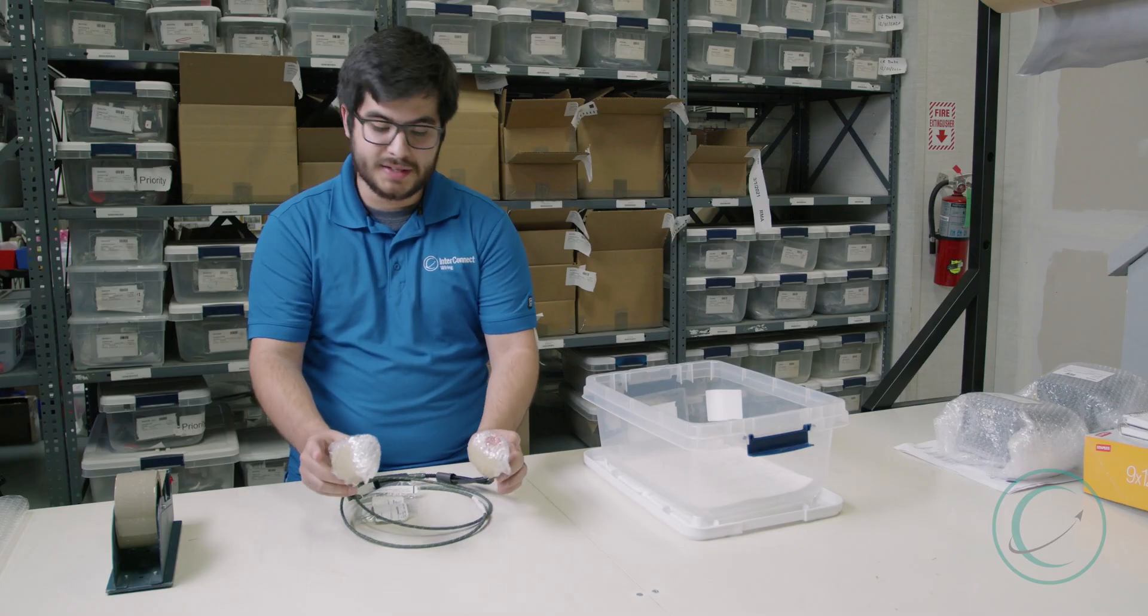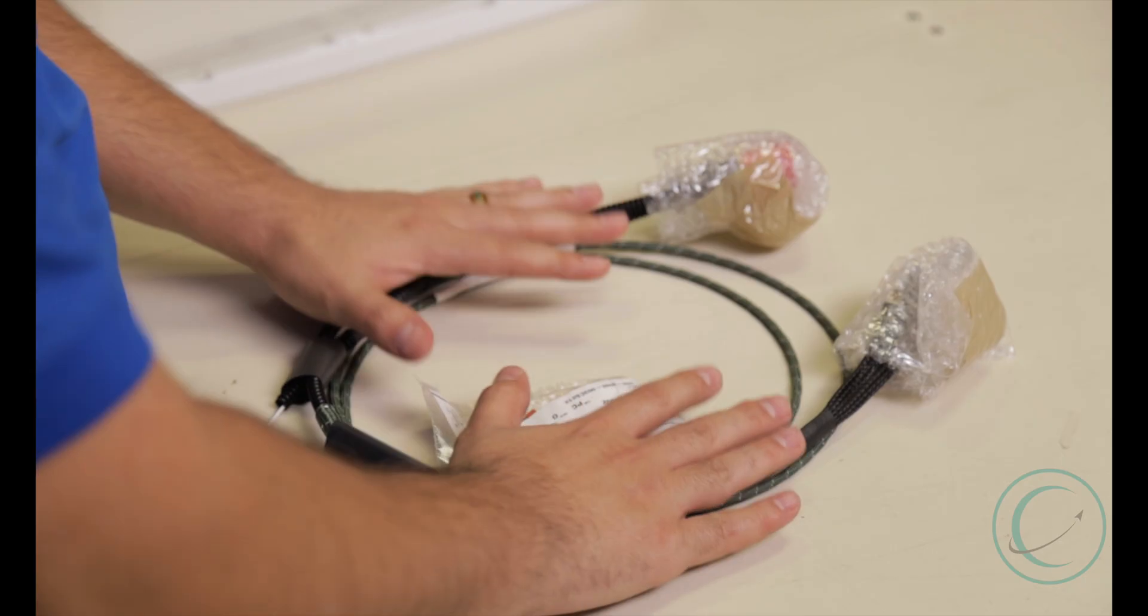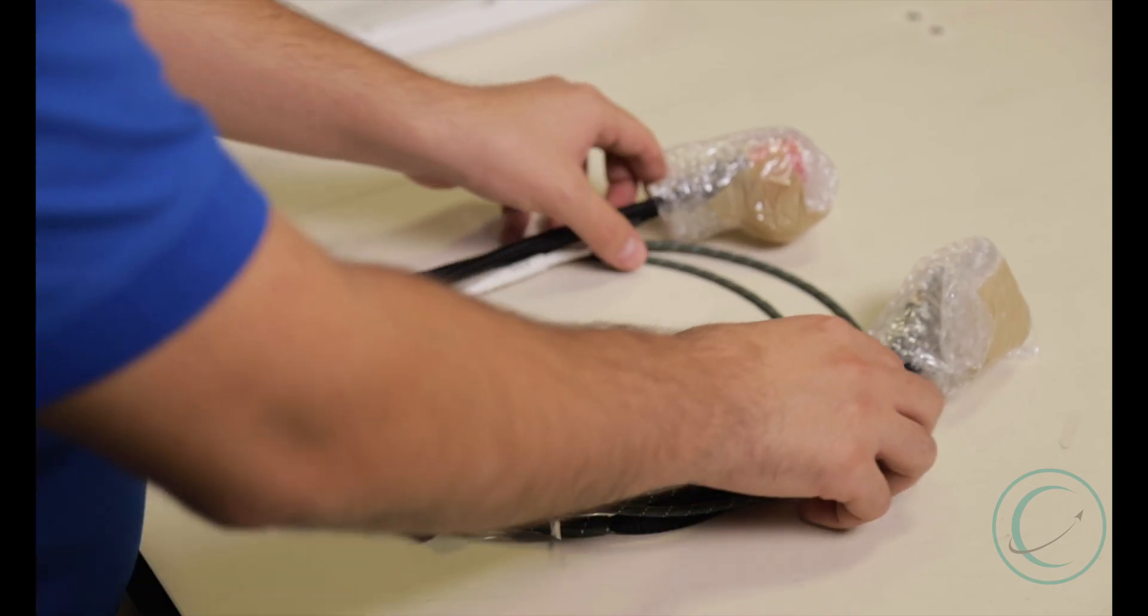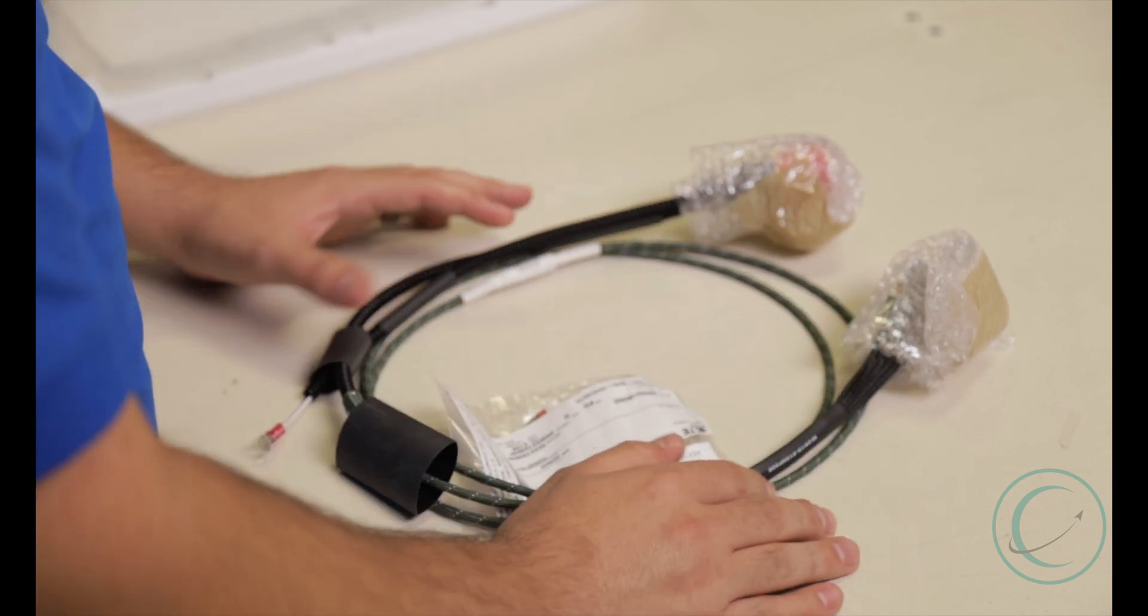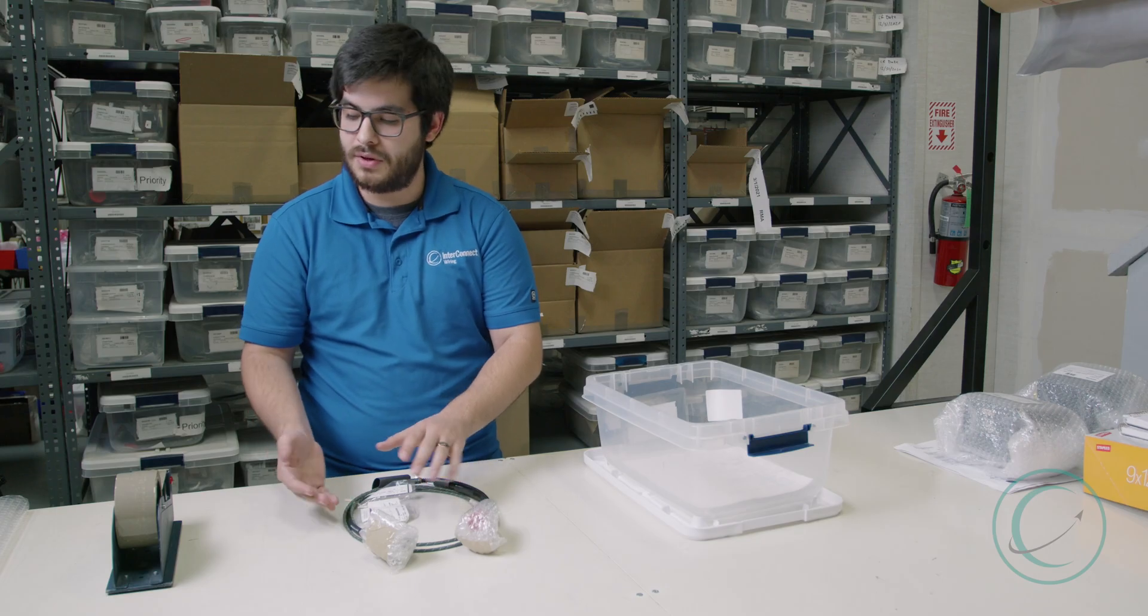After both connectors have been protected with a good layer of bubble wrap, we begin the entire wrapping process of the harness. This is a Lockheed Martin harness, so what's required is three layers of the wrap on one side and two on the other.